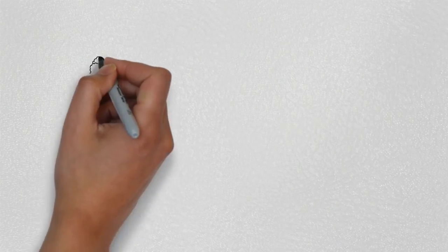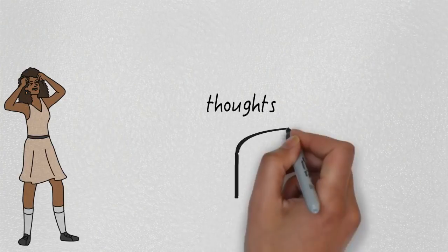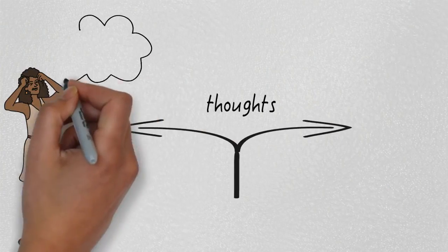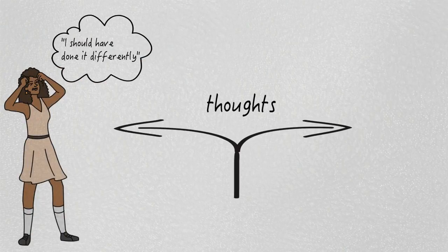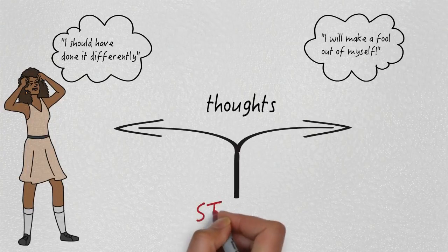Stress, worry, and irritability is a direct result of those thoughts, which are either regrets about the past, which we can no longer change, or worry about the future, which hasn't even yet happened. But we experience stress and worry in the present moment.